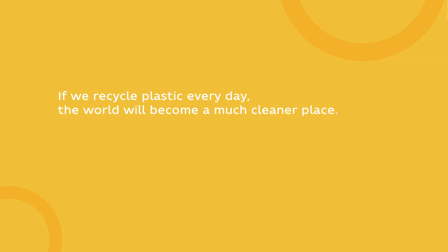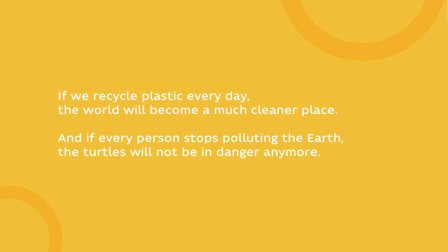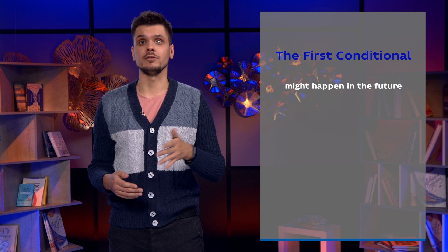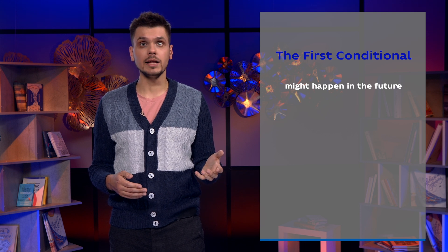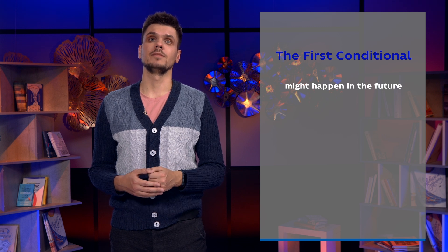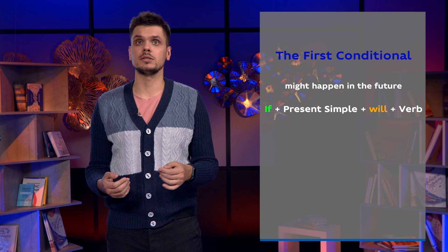Great job! Now let's think. If we recycle plastic every day, the world will become a much cleaner place. And if every person stops polluting the earth, the turtles will not be in danger anymore. These sentences all have one word in common — the word IF. IF sentences are also called CONDITIONAL sentences, and this one is called THE FIRST CONDITIONAL. We use the first conditional to talk about something that might happen in the future. There are two parts: the IF clause (condition) and the RESULT clause. To make sentences in the first conditional, follow the structure: IF + present simple + WILL + verb.